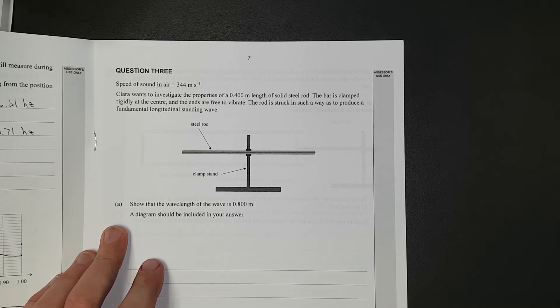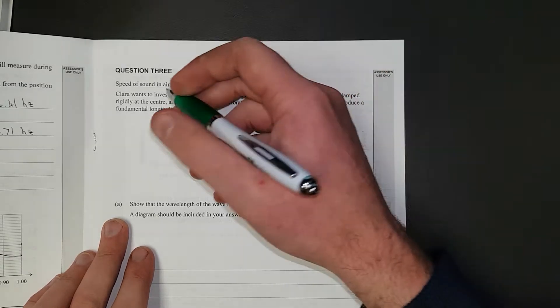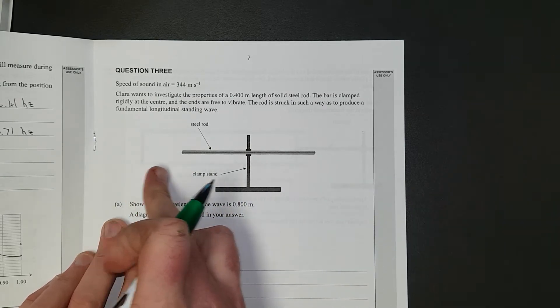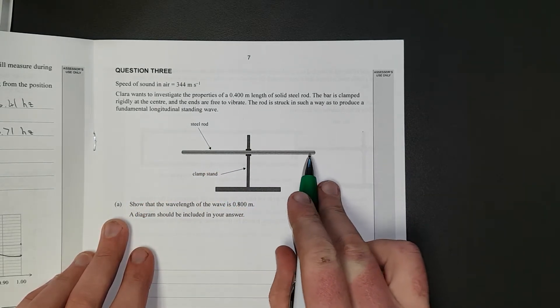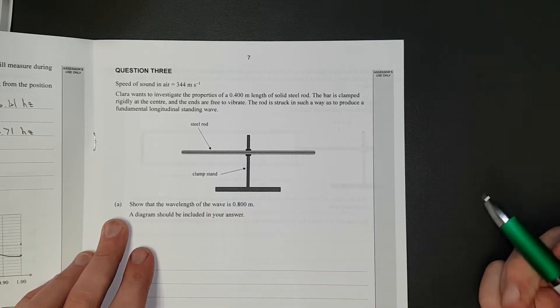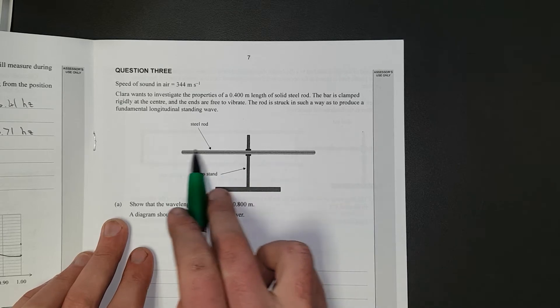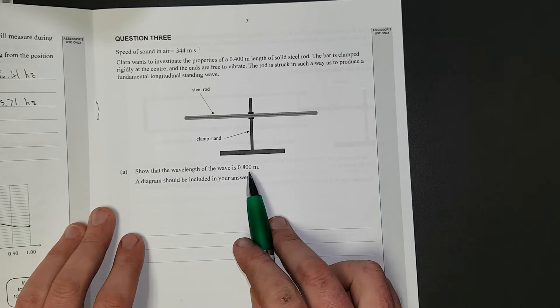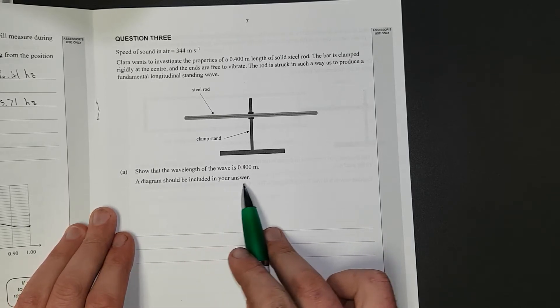The rod is struck in such a way as to produce a fundamental longitudinal standing wave. So transverse is like you're traversing a mountain. Longitudinal goes like that. The wave travels like a sound wave, it's a compression wave. The waves travel up and down the steel rod. Show that the wavelength of the wave is 0.8m. A diagram should be included in your answer.